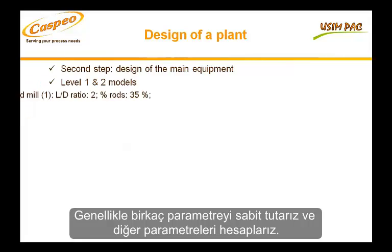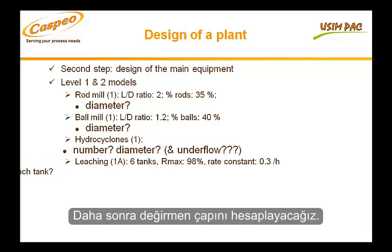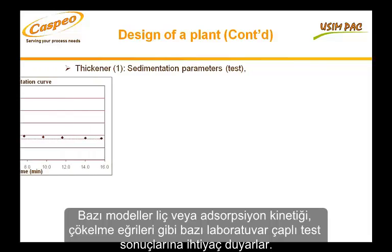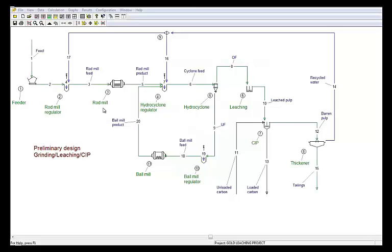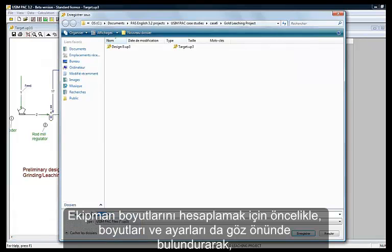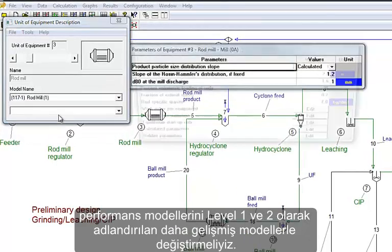We generally fix some parameters and calculate the others. For grinding mills, we fix the load of grinding media and the length-to-diameter ratio, and will then calculate the diameter. For leaching, we fix the number of tanks and calculate the tank volumes. Some models can require lab test results, such as leaching or adsorption kinetics, or settling curves. To calculate equipment sizes, we must first replace the performance models by more advanced ones, accounting for sizes and settings, called level 1 or 2 models.